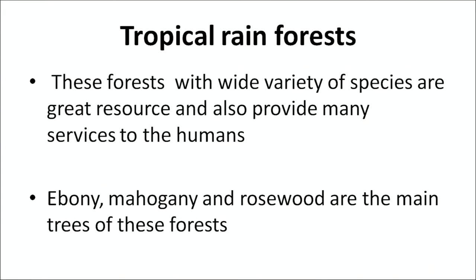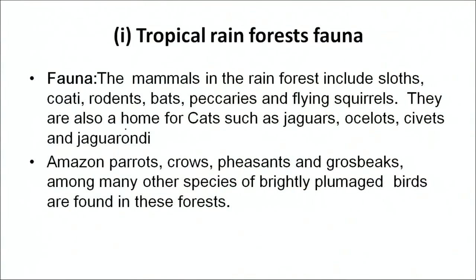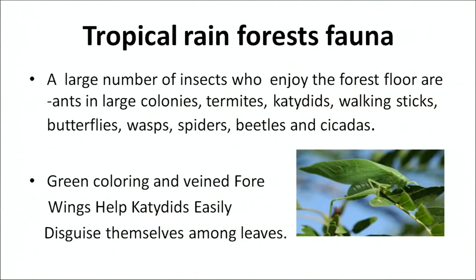Ebony, mahogany and rosewood are the main trees found in these forests. The mammals in these rainforests include sloth bear, rodents, bats, peccaries and flying squirrels. They are also home to cats such as jaguar, ocelot, civets and other species. Amazon parrot, crows, finches and grosbeaks are among the many species of brightly plumaged birds commonly found here. A large number of insects that enjoy the forest floor include ants in large colonies, katydids, walking sticks, butterflies, wasps, spiders, beetles and cicadas.